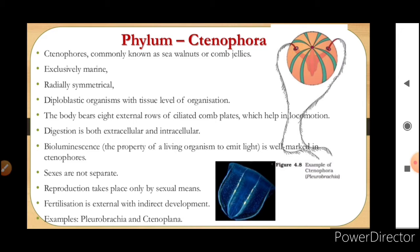The body bears eight external rows of ciliated comb plates which help in locomotion. Digestion is both extracellular as well as intracellular — intracellular means inside the cell, and extracellular is in the cavity made by the cells. They also show the property of emitting light, that is bioluminescence, which is well marked in ctenophores.